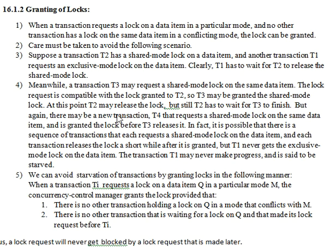One more new transaction, T4, is also requesting a shared mode lock on the same data item Q. That grant permission is given by CCM. The same thing happens: T3 will release and T3 has to wait for T4 to finish. Like that, all the transactions are getting a chance to use the same data item Q. But observe T1 — it is not progressing. It is possible that there is a sequence of transactions that each requires a shared mode lock on the same data item, and each transaction releases the lock a short while after it is granted.